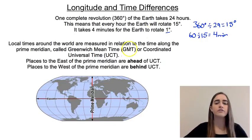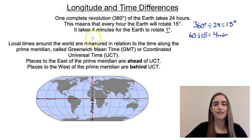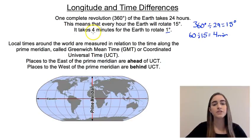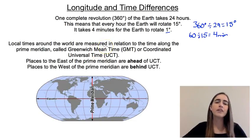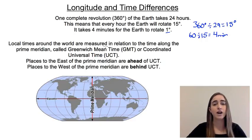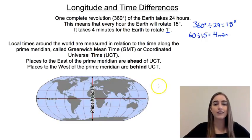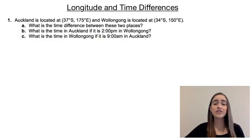In reality, even though theoretically every one degree takes four minutes — so places one degree apart in longitude would be four minutes apart in local times — that's not how it works in reality. In reality we have time zones, and a single time zone can cover a really wide range of longitudes. But in this video we're going to look at it all theoretically, so if two places were one degree apart, they'd be four minutes different in their times.